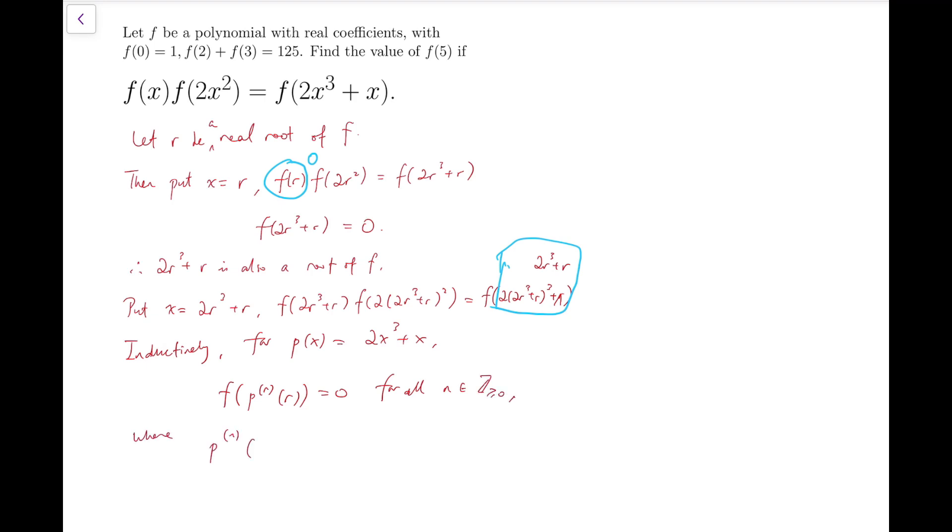Where I define this notation by n times iterating f^(n). However, this is actually absurd because now I have an infinite sequence of roots. So given that r is real, then 2r³ + r must be having a greater absolute value than r.